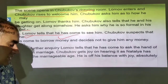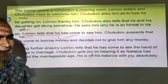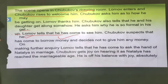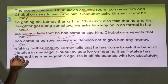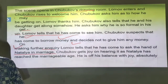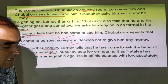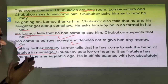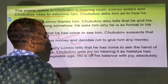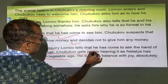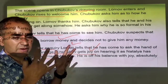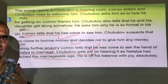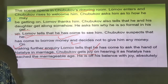But Lomov has something else in mind. He tells Chubkov that he has come to ask the hand of Natalia in marriage. Chubkov is overjoyed, as Natalia has reached marriageable age. He is absolutely off his balance with joy. Chubkov is very happy that his daughter also needs to get married.